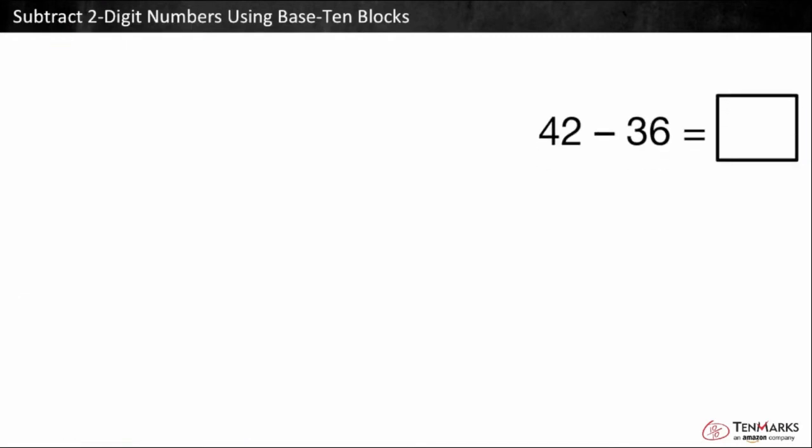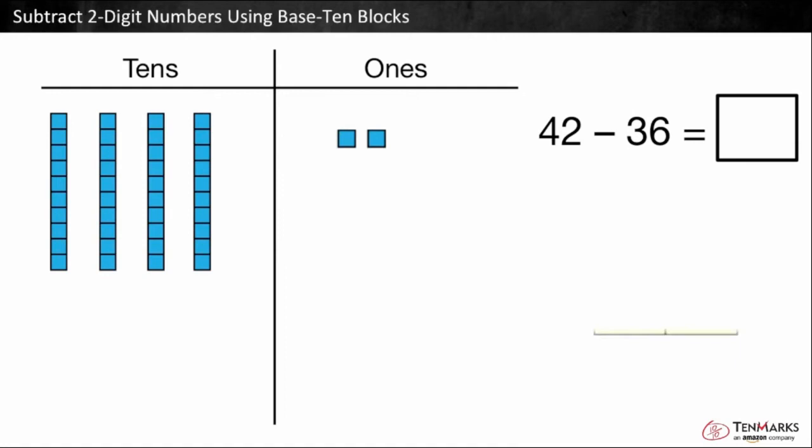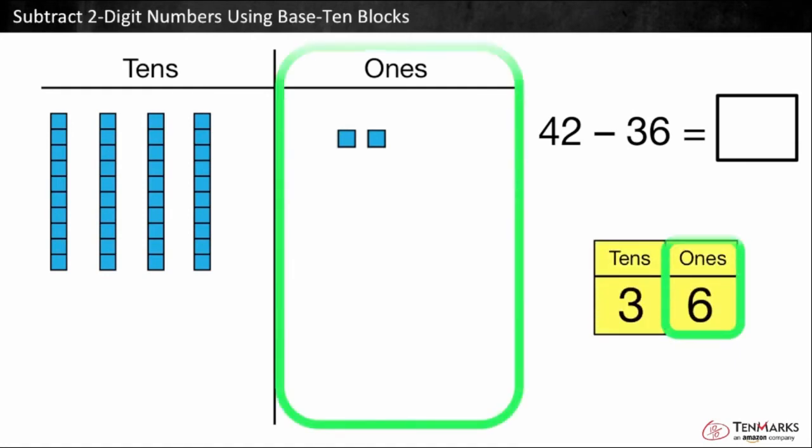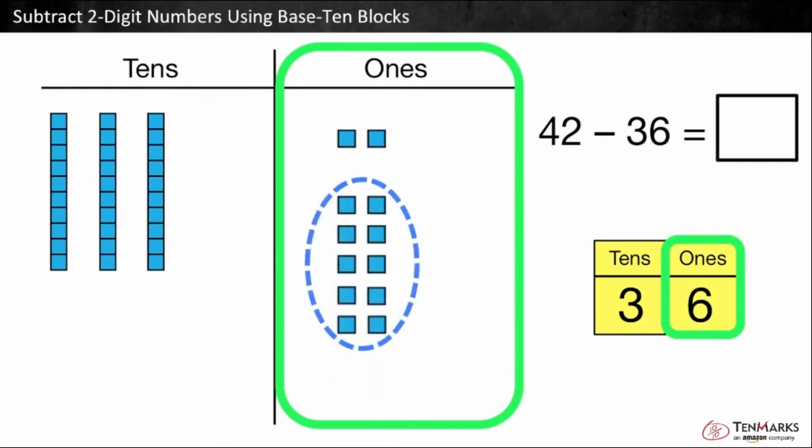Let's look at another example. 42 minus 36. We can use base ten blocks to represent 42. Four tens and two ones. Start by subtracting the ones. Can we take six ones away from two ones? No. There are not enough ones. We can trade one ten for ten ones. Now there are six ones left.